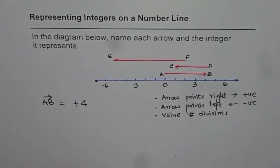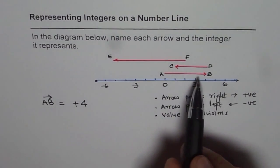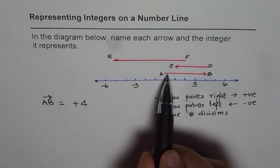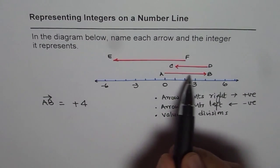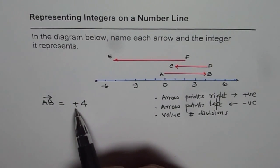I hope you get the point. It is important to note that in case of integers, we can move this line anywhere. Its value remains same. The starting point could be 0 or minus 3. The length of this arrow shows the value and direction gives you positive or negative.